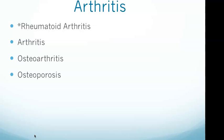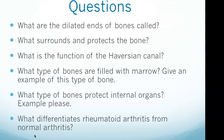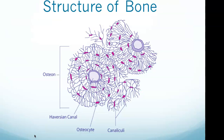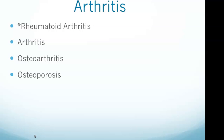Rheumatoid arthritis is an autoimmune disease caused by immune cells attacking the cartilage or joint lining, while regular arthritis develops when cartilage between joints breaks down over time — that's the key difference. Osteoarthritis is a degenerative joint disease characterized by the loss of cushioning cartilage. Osteoporosis is caused by lack of calcium and vitamin D and is characterized by bone loss that occurs naturally with aging.